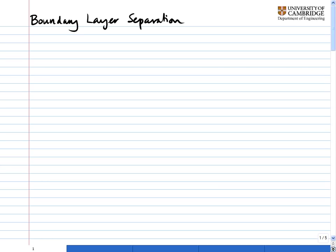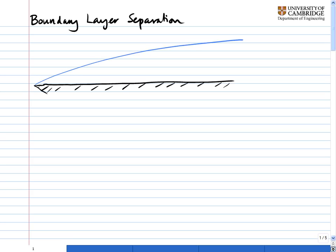Boundary layer separation has one of the most profound implications for aerodynamics, which is why it's so important. Let's start by considering a boundary layer that's growing over a flat plate. The first important fact is that the change in pressure in the y-direction, dp by dy, of the pressure field, which is a function of x and y — taking the origin as the front of the plate — the change in pressure in the y-direction is very, very small, so it's approximately equal to zero.